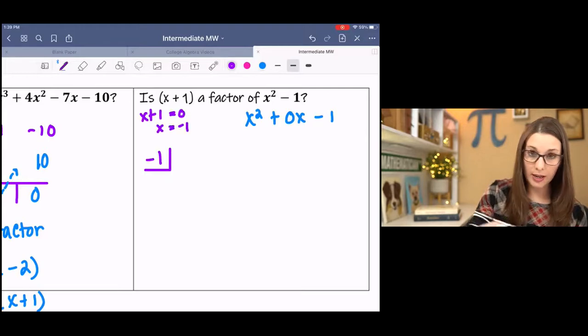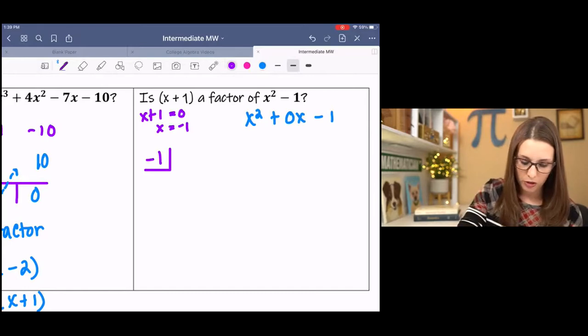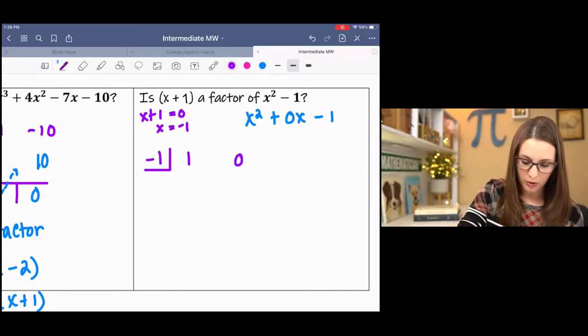We want to write it in descending order including the terms that it skips. So inside my box I have negative 1 because x plus 1 equal to 0, we get negative 1 is the 0. And then my coefficients are 1, 0, negative 1.